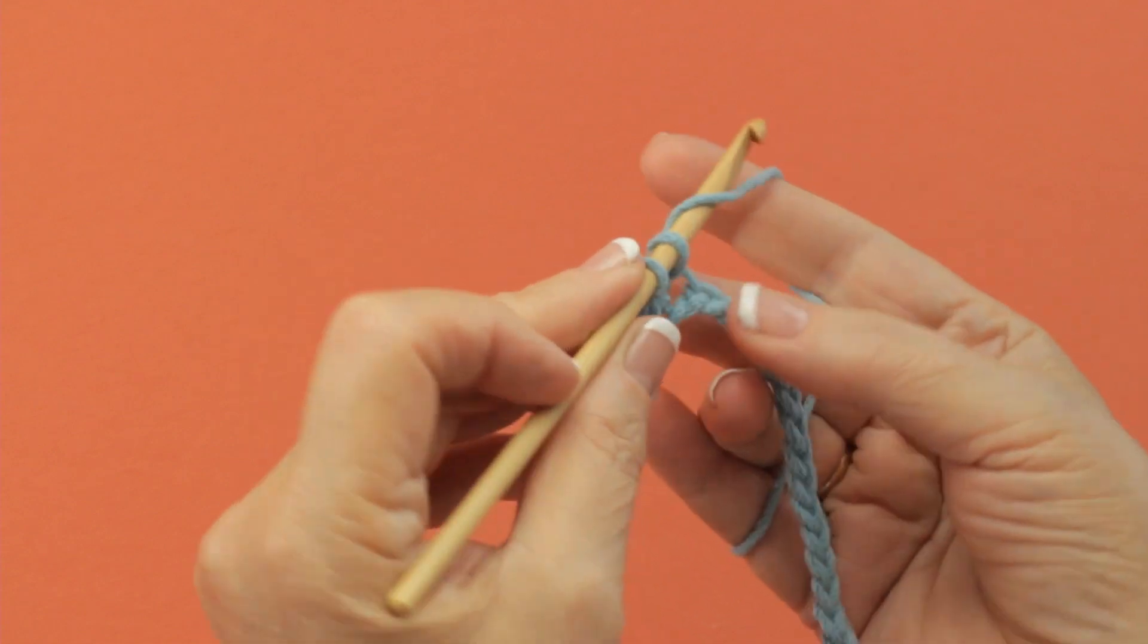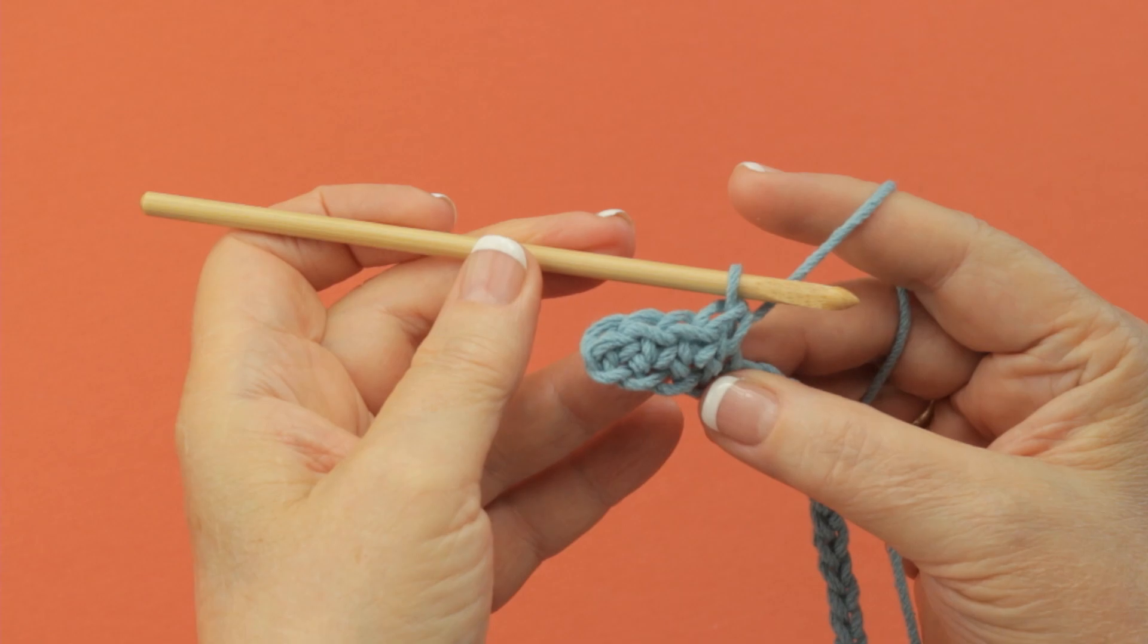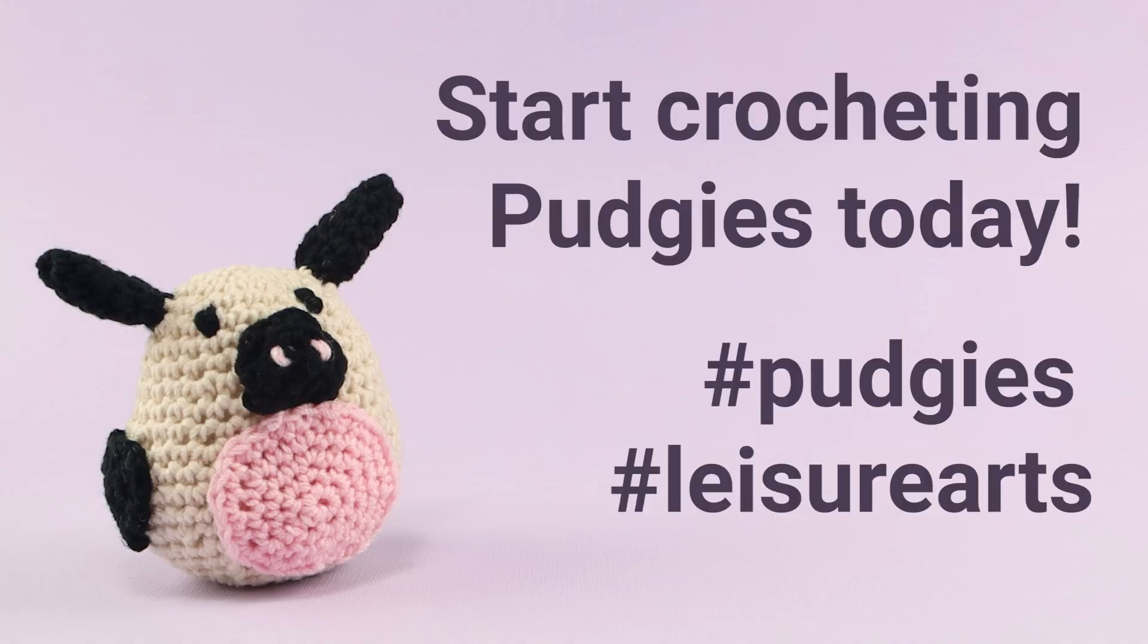Yarn over and draw through both of the loops, single crochet. We're just ready. Thank you.